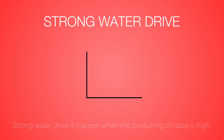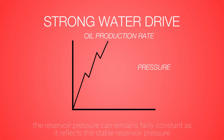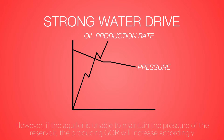Strong water drive happens when the producing oil rate is high. However, if the aquifer is unable to maintain the pressure of the reservoir, the producing GLR will increase accordingly.